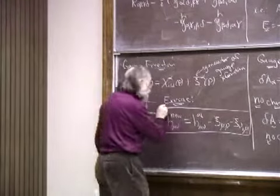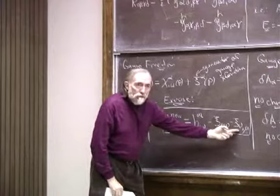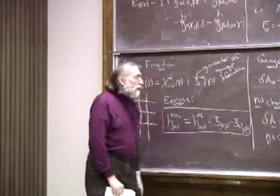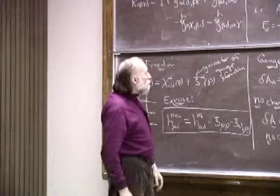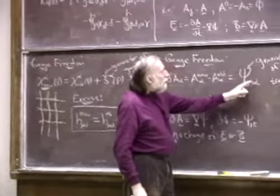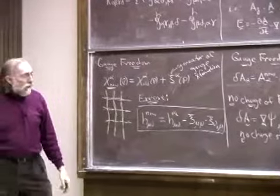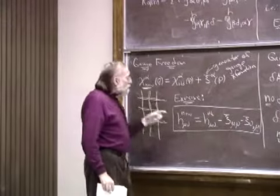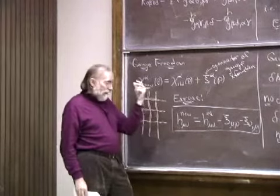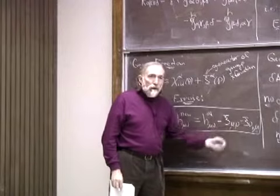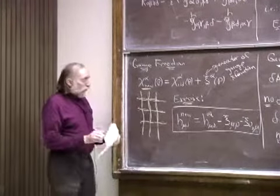Under this gauge change you can show, as an exercise using the formula for how the metric changes under a coordinate transformation, that the new metric perturbation is: H_μν_new = H_μν_old − ξ_μ,ν − ξ_ν,μ. The gauge change is: take the gradient of the vector field that is the gauge generator and symmetrize, then subtract it from H. This is the simplest gauge change you could imagine for a second-rank symmetric tensor field — the only thing you can do is take the gradient of a vector field and symmetrize, then add or subtract depending on conventions.